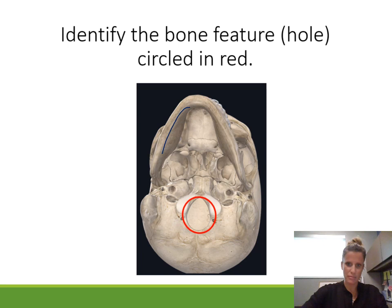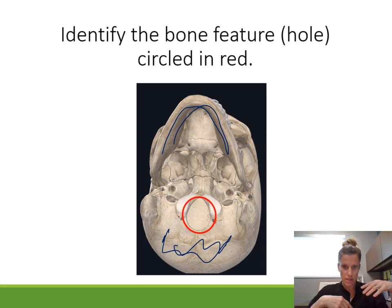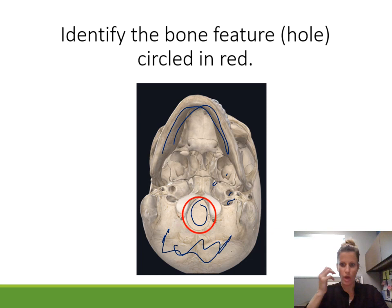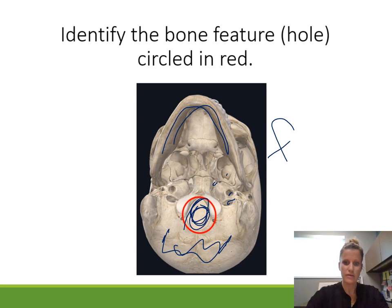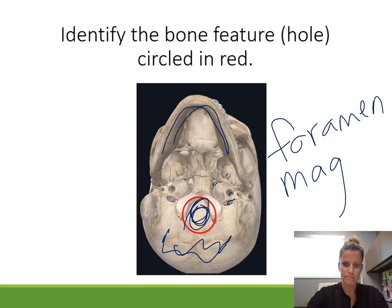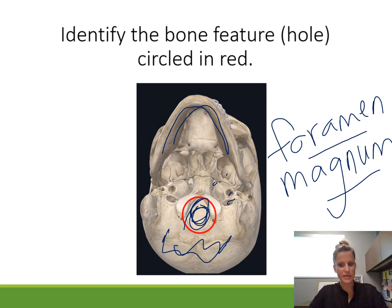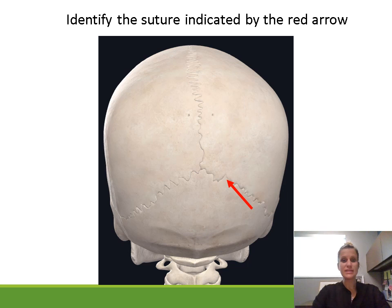We're looking at the bottom of the skull — the occipital bone is in the back. There is a really big hole right here where the spinal cord goes through and meets up with the brainstem. The name of this hole is the foramen magnum. A foramen is a hole, and magnum means big — it's the big one.